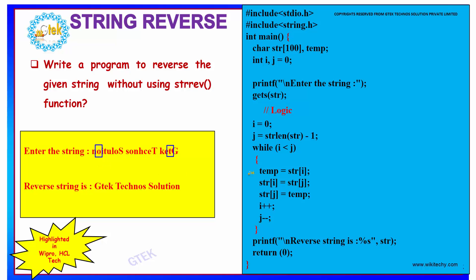So further, your while loop will be executing until your i is incremented and your j is decremented. So this swaps the letter.